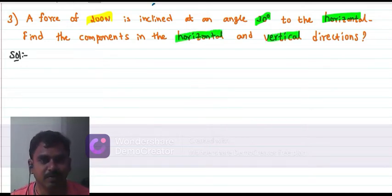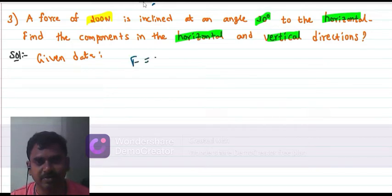First of all, we have to write the data. Given the data: force F is equal to 200N. Theta is equal to 30 degrees angle to the horizontal.